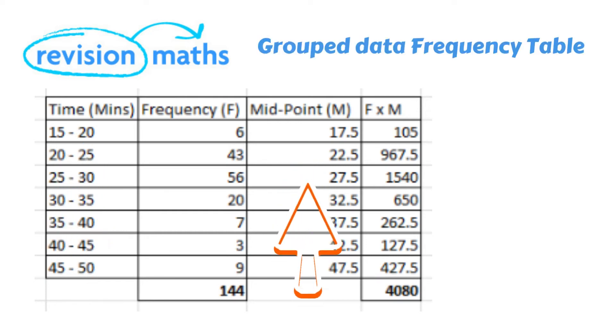As you can see from the table I've worked out the frequency times and the midpoint values for each segment. In the first row we can see six runners finish between 15 and 20 minutes. 17.5 is the midpoint between the 15th and 20 minutes.